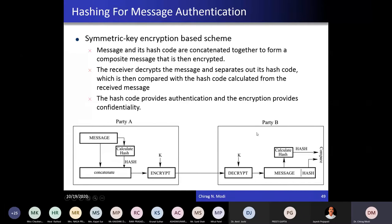At the receiver side, these encrypted values will be decrypted. The receiver will get two things: the message plus the hash value. The receiver will again calculate the hash of the received message, and this calculated hash will be compared with the hash value embedded in the message. If the calculated hash value and the hash value within the message are the same, that means the message is correct. Here, the hash code provides authentication and encryption provides confidentiality.